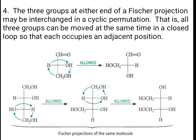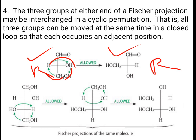The three groups at either end of a Fisher projection may be interchanged in a cyclic permutation — all three groups can be moved at the same time in a closed loop so that each occupies an adjacent position. You can interchange positions cyclically: take this H here, this OH here, and this CH2OH here. This is Fisher-allowed, so all configurations will be the same. If this center was R, it will remain R in RS nomenclature.